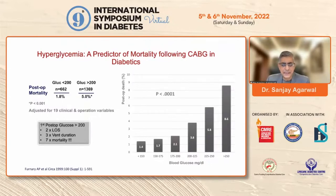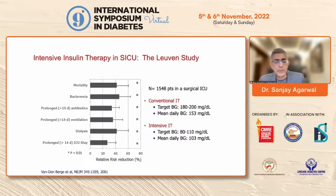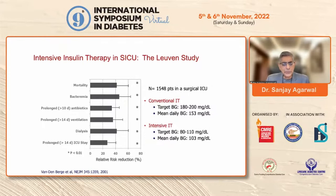Mortality incidences increase by seven times, so you need to be aggressive early enough to bring blood glucose down to acceptable levels. The landmark Leuven study by Vandenberg compared intensively treated patients (target 80–110 mg/dL) versus conventionally treated patients (target 180–200, insulinized only when glucose >200). Intensively treated patients had lower incidences of mortality, bacteremia, need for antibiotics, prolonged ventilation, dialysis, and shorter ICU and hospital stays.